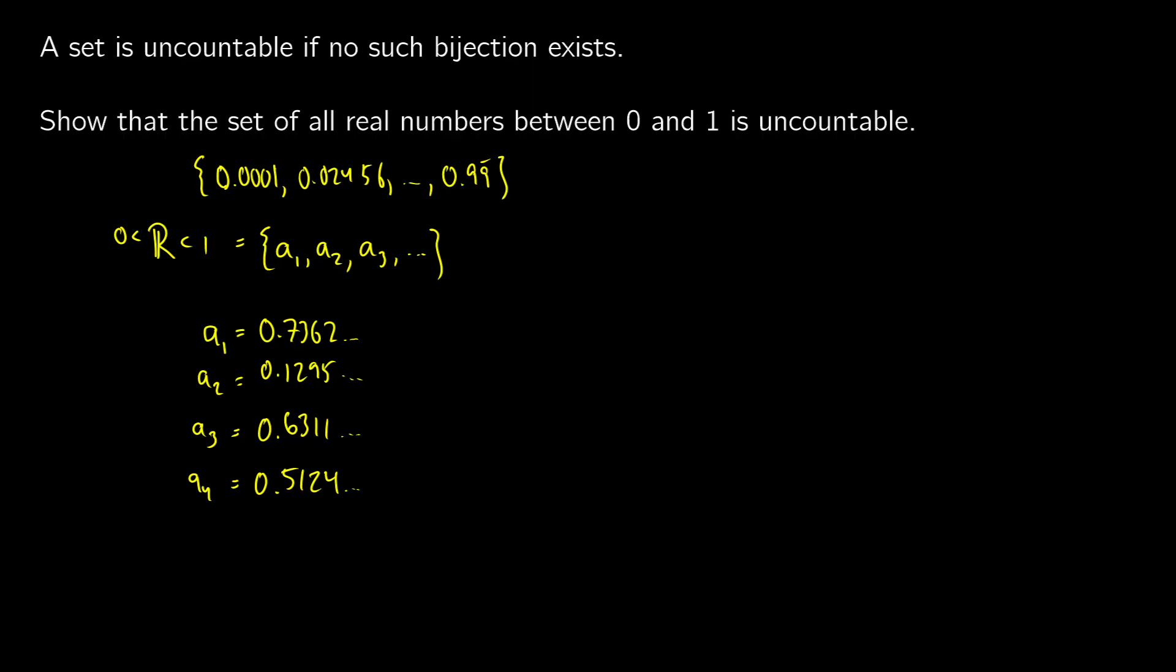So if our set is countable, all of our numbers should be accounted for. But what we're going to show is that we can make a new number that wasn't in our original set. Because we can make a new number, we'll show that it is uncountable.